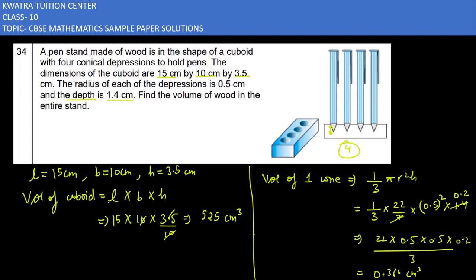And I don't think so that there will be any problem, because it was very simple. You had to find the volume of cuboid, then remove the volume of four cones. And that is what we have done. So yes, this is the answer to it. Now we will be moving to another one.